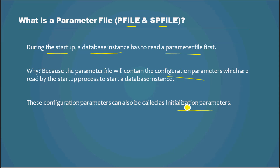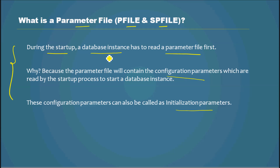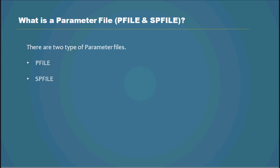The parameter file tells the instance what kind of memory it can use and what kind of settings it can use for various other parameters. So like that, Oracle also has something called a parameter file which we need to configure first, so that it will be read by the database instance to set up the various properties of the instance.